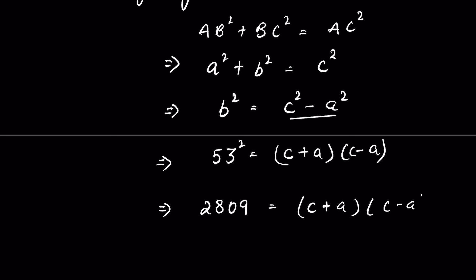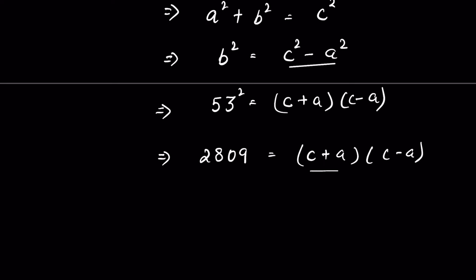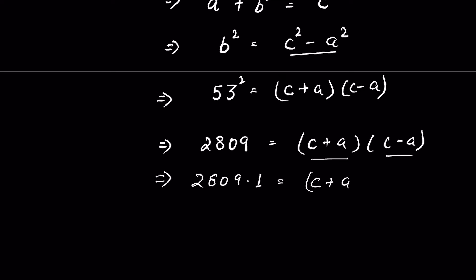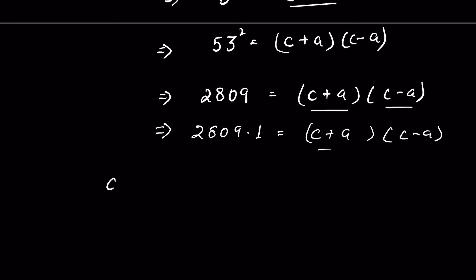Now (c + a) will be the bigger number and (c − a) will be the smaller number, and their product should equal 2809. It cannot be 53 times 53 because both would be equal. So we take 2809 times 1, meaning c + a equals 2809 and c − a equals 1.